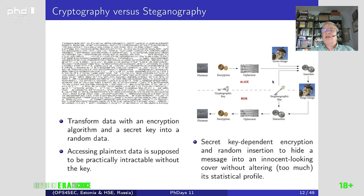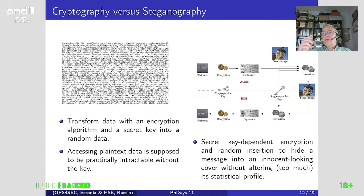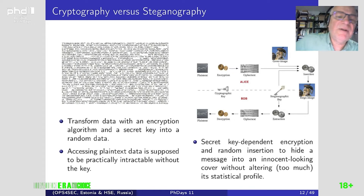Steganography involves a complete process. You take data, encrypt it, take a cover medium — it may be an image, audio file, or video file — and embed the secret data to produce a stego image. You send it to the recipient, who extracts and decrypts. It is mandatory to have no visual difference between the cover image and the stego image. The issue is to modify bits without too much altering the statistical profile, which is rather complicated in real cases.